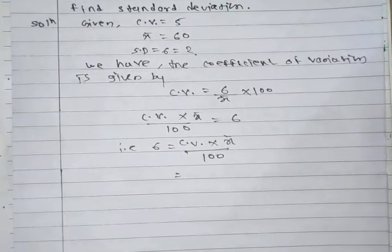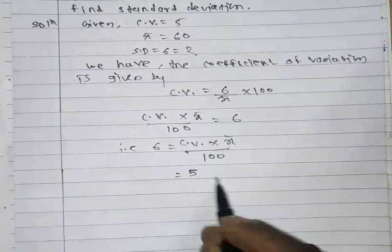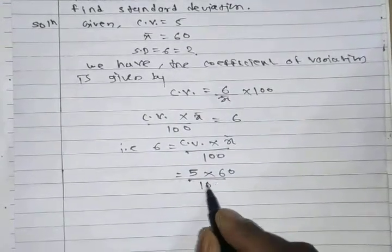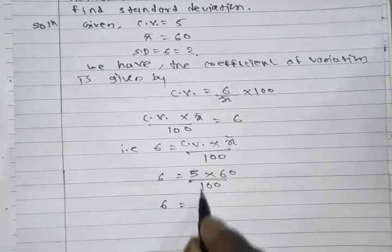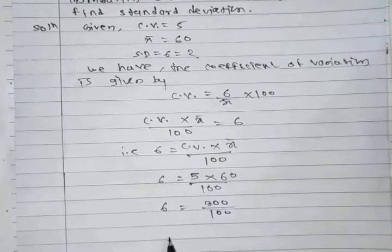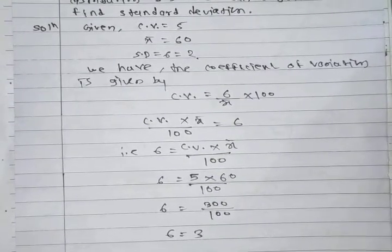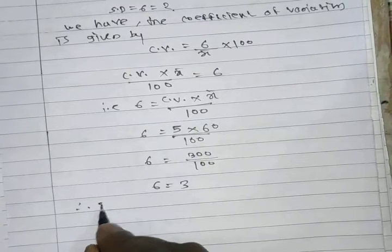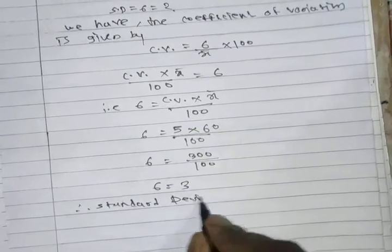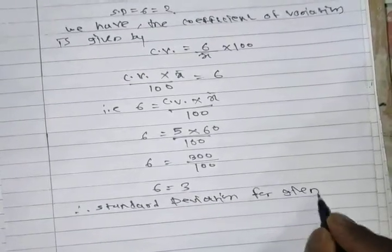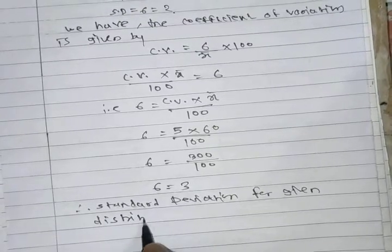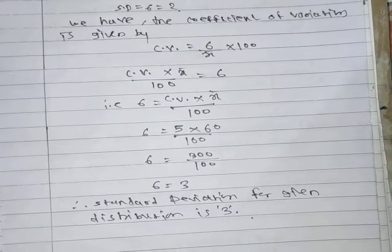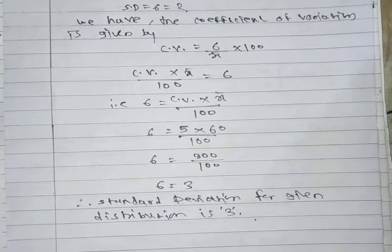Coefficient of variance for this example is 5, and mean is 60, divided by 100. So sigma equals 5 × 60 = 300, divided by 100, which equals 3. Therefore, the standard deviation for the given distribution is 3.